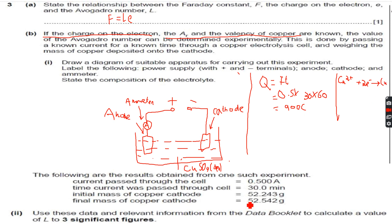And what we know is that the final mass of copper was 52.542 grams, the initial mass before the electrolysis was 52.243 grams. So the mass of copper deposited will be 52.542 minus 52.243.